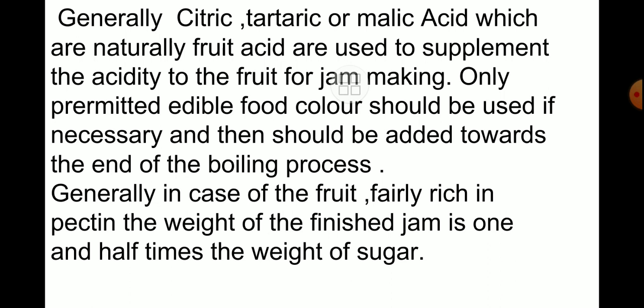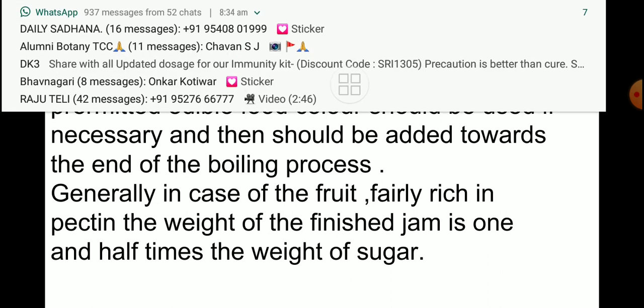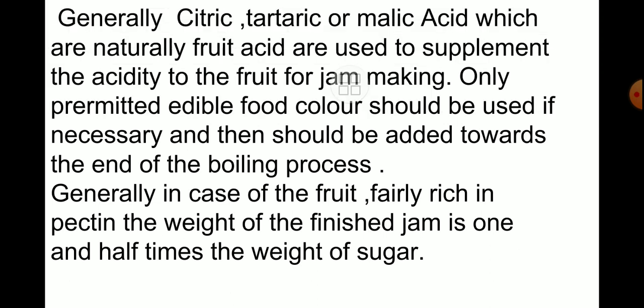Generally, citric, tartaric, or malic acid — which are naturally occurring fruit acids — are used to supplement the acidity of the fruit for jam making. I have already told you some precautions and scientific methods we have to follow — follow the protocol. At the time of pH adjustment of the boiled pulp to pH 3, use citric, tartaric, or malic acid, which are natural fruit acids used to supplement acidity for jam making.